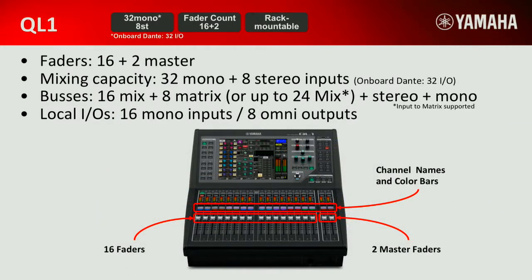On the CL you have 24 mixes plus eight matrix. Here on the QL you have 16 mixes plus eight matrix, so you can do up to 24 monitor mixes. The QL1 is the smaller version and can be rack mountable — just remove the side panels and add rack ears. You have 16 plus two faders, 16 inputs by eight outputs, and a 32x32 Dante module, allowing you to mix up to 32 input channels plus the eight stereo inputs.